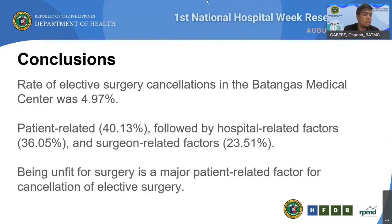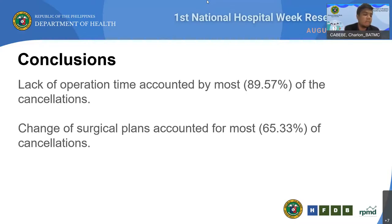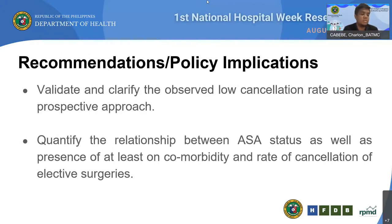Conclusion: The factors that led to cancellation of elective surgeries were mostly patient-related, followed by hospital-related factors and surgeon-related factors. Of the patient-related factors, being not fit for surgery accounted for most cancellations. The patient's ASA category status and having at least one comorbidity were major reasons for cancellation. Hospital-related factors, particularly the lack of operation time, accounted for most of the cancellations. Among surgeon-related factors, the change of surgical plans accounted for most cancellations. No anesthesiologist-related factors were noted.